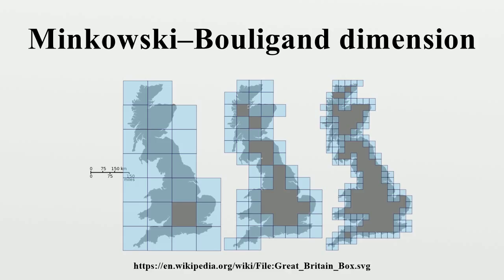Both box dimensions are finitely additive: if A1, ..., An is a finite collection of sets, then the box dimension of their union equals the maximum of their individual dimensions. However, they are not countably additive — this equality does not hold for an infinite sequence of sets. For example, the box dimension of a single point is zero, but the box dimension of the collection of rational numbers in the interval [0, 1] has dimension one.